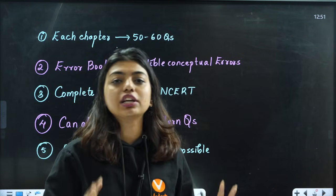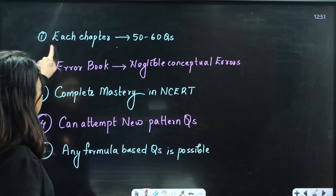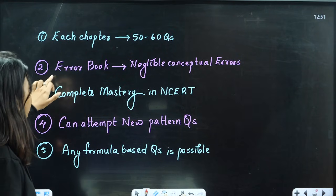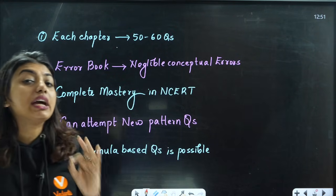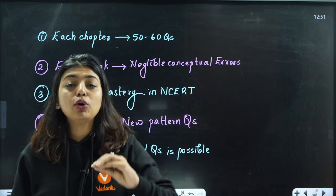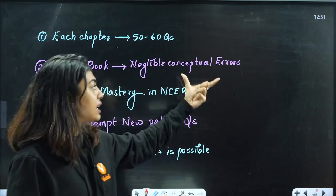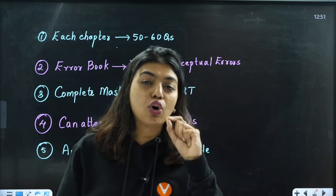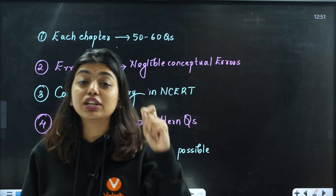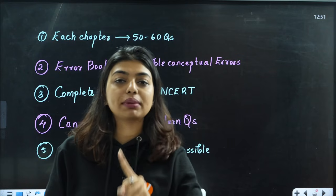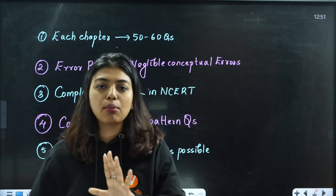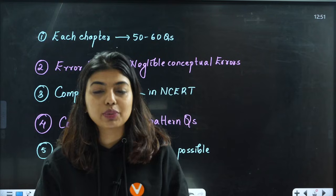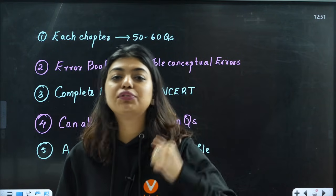First thing: each chapter 50 to 60 questions, if you are in a position to solve, depends on this. If you have an error book and there are negligible, almost no errors which are conceptual errors, that means you are very good at the concepts. Because you understood all the concepts, you have not made a single conceptual mistake in the mock tests that you have attended. If you are a student in that situation, then yes, chapter-wise 50-60 MCQs will be more than enough.